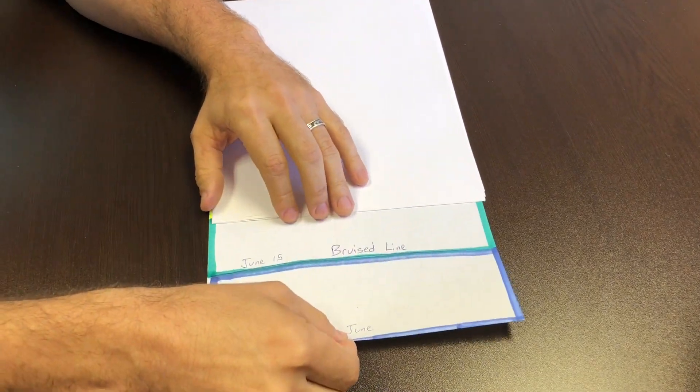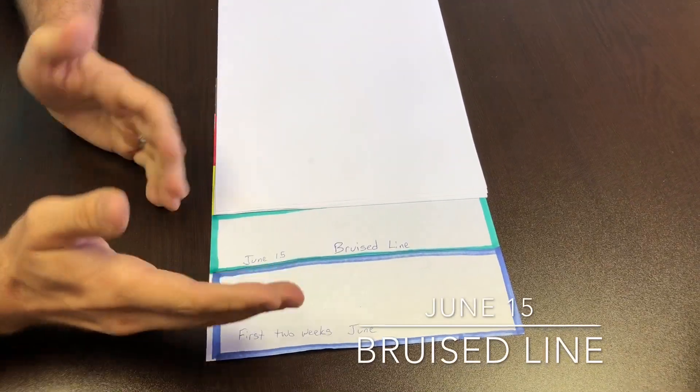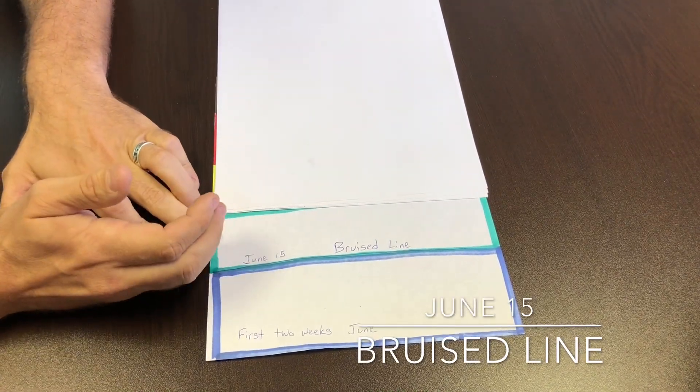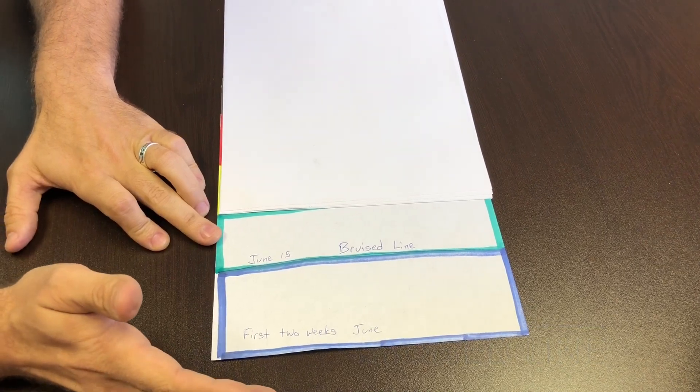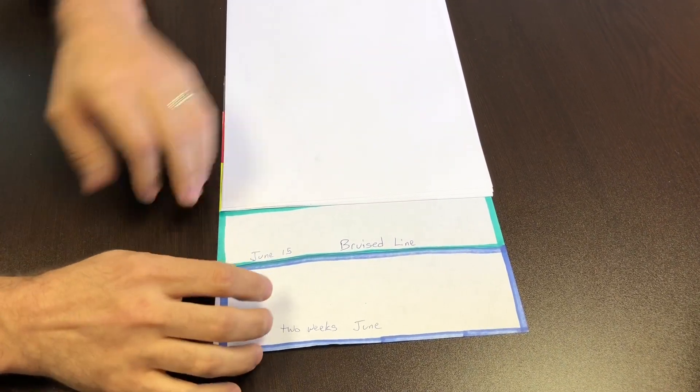Beyond the first two weeks though we're going to call it the bruised line. On or around June 15th is when applying at that point slightly hurts your chances. It's still okay to apply in late June. You're not going to devastate your chances of getting in. But that's why you should apply in the first two weeks if you can.